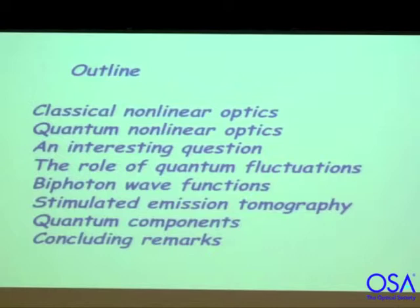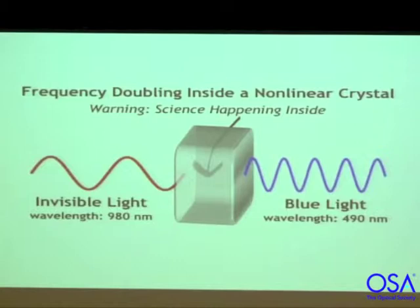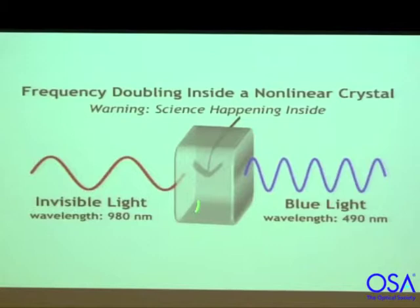We'll start with classical nonlinear optics — this will be review for many, but let's get ourselves on the same page. Some of you know that if you take certain kinds of crystals and put in light of one frequency, you get some light of another frequency coming out. This is really quite remarkable. And if you're not astounded by this, you have lost some of your childhood wonder and should be ashamed of yourselves. In quantum language, two photons basically fuse into one, but you can talk about this process classically.